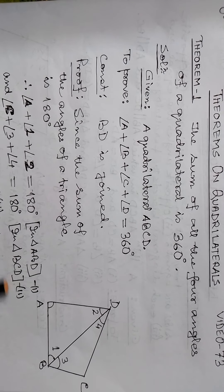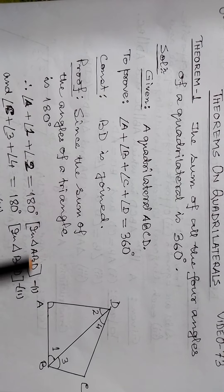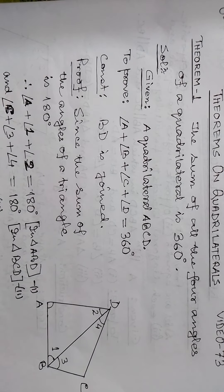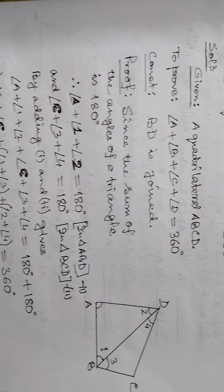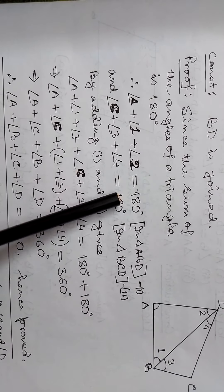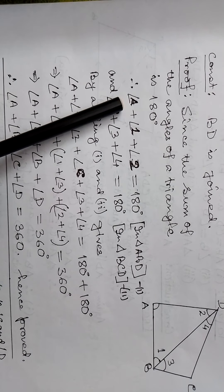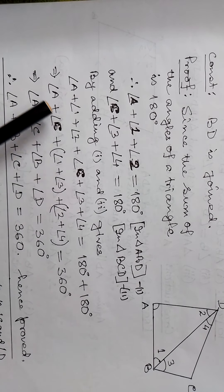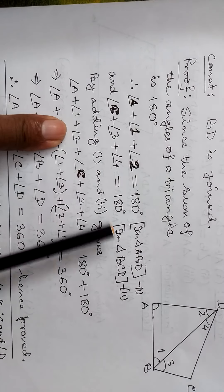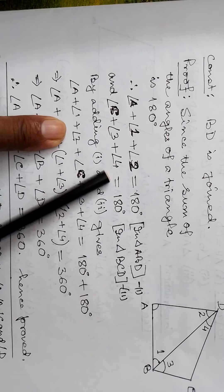In triangle BCD, this gives us a second equation. The angles are: angle C plus angle 3 plus angle 4. And for triangle ABD: angle A plus angle 1 plus angle 2. The second equation is angle C plus angle 3 plus angle 4.